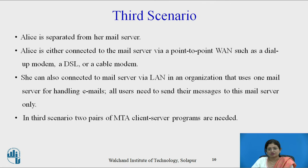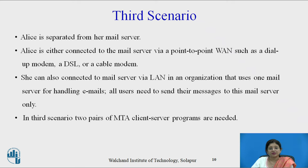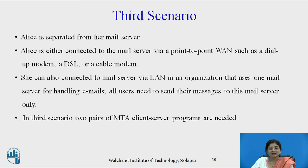Let us move toward the third scenario of email architecture. Here, Alice is separated from her mail server. In the second scenario, Alice was directly connected to the mail server, but in this third scenario the situation is different. Alice is connected to the mail server via a point-to-point WAN such as a dial-up modem, DSL, or a cable modem, or via a LAN in an organization that uses one mail server for handling emails. All users send their messages to the mail server, and then those messages are forwarded to the internet. In this third scenario, two pairs of MTA client-server programs are needed.